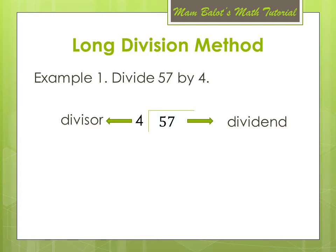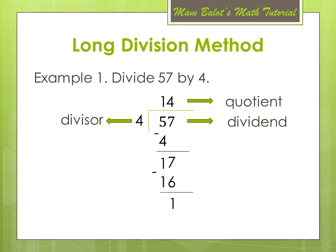The first thing we do is divide the first digit by the divisor. So we have 5 divided by 4, we get 1. Then multiply it back to the divisor: 1 times 4 equals 4. Then we subtract: 5 minus 4 equals 1. Then we bring down the next digit which is 7, so that becomes 17. Going back to the process: 17 divided by 4 gives 4. Multiplying again: 4 times 4 equals 16. Then subtracting: 17 minus 16 equals 1. So from this, we know that 14 above is the quotient and the 1 below is the remainder.